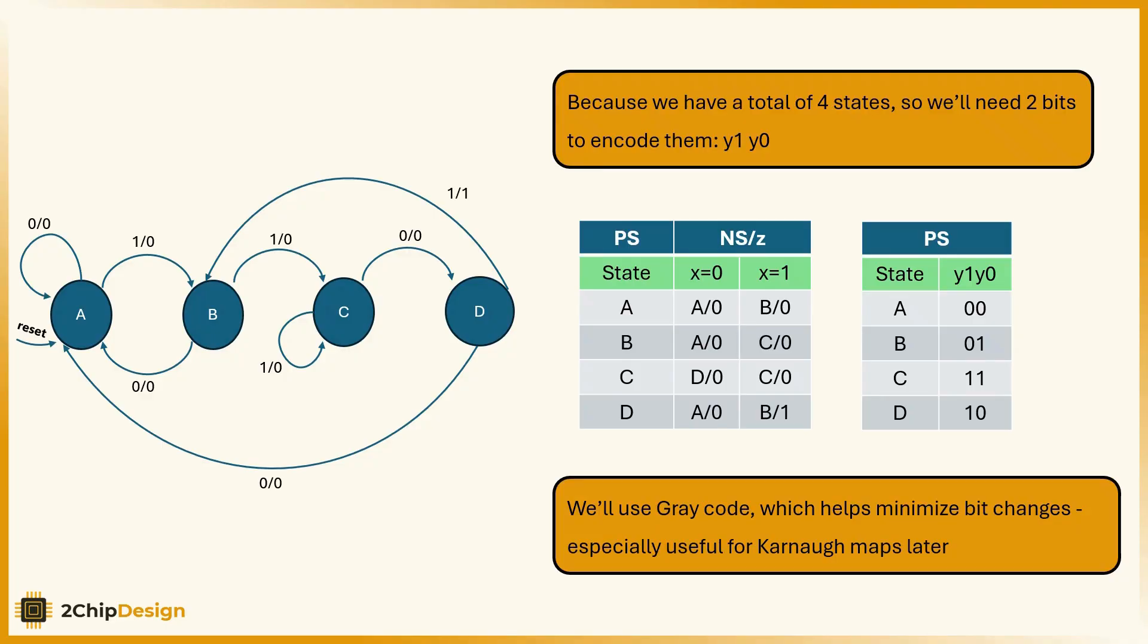Because we have a total of four states, we will need two bits to encode them, y1 and y0. We will use gray code, which helps minimize bit changes, especially useful for Karnaugh maps later.